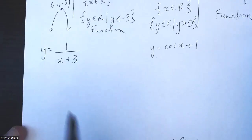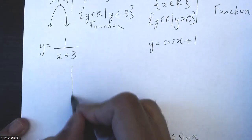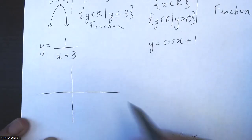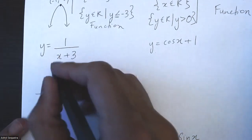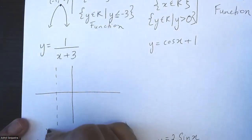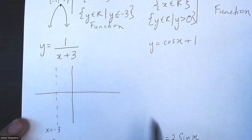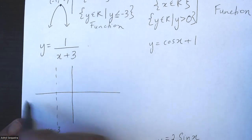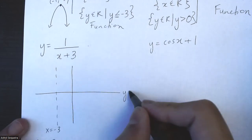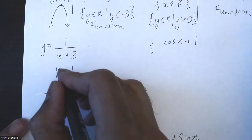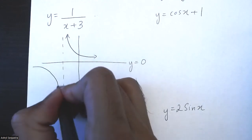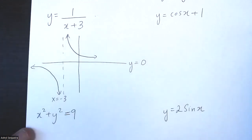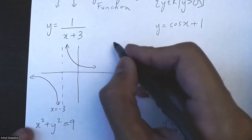The third one is a reciprocal function. For reciprocal functions you always start with your asymptotes. My vertical asymptote is the solution to the denominator, which is x = -3. My horizontal asymptote is the c value, which does not exist, so the horizontal asymptote is y = 0. There are no reflections, so it's just the original reciprocal function shape.